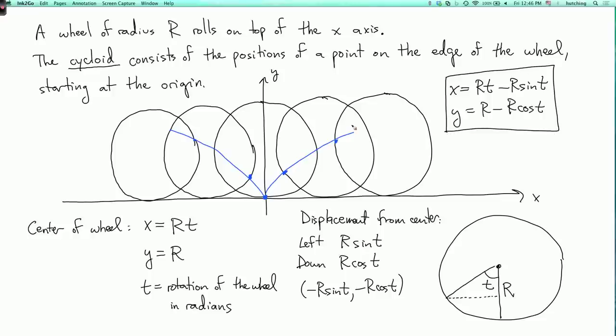Now different parametrizations are possible, depending on how fast you want to roll, but this one is convenient to work with. So now that we have these equations, we can calculate the slope and try to understand this curve better.